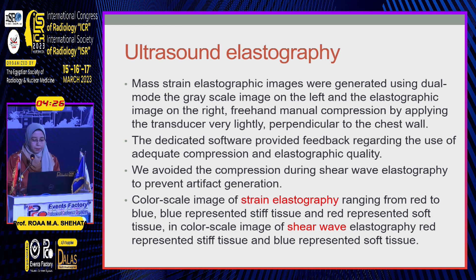We avoid compression when using shear wave elastography to prevent artifact generation. The color scale image of strain elastography ranges from red to blue, where blue represents stiff tissue and red represents soft tissue. For shear wave elastography, the color scale is reversed: red represents stiff and blue represents soft tissue.